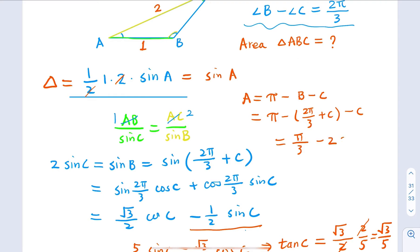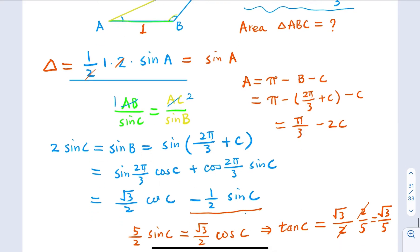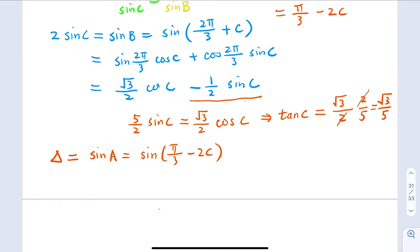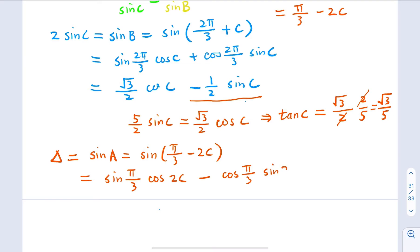This turns out to be π minus 2π/3 minus 2C. So sine A equals sine(π/3 − 2C). Using the trig difference formula for sine, this is sine(π/3)·cos(2C) minus cos(π/3)·sine(2C).